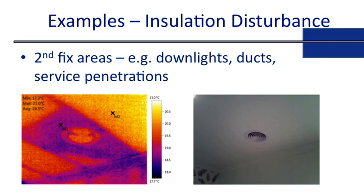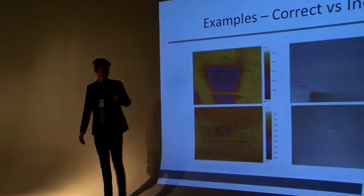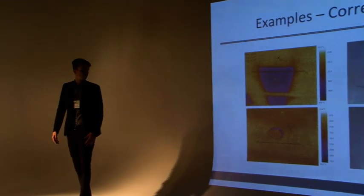Second-fix areas are generally a pretty big issue within our Australian construction industry at the moment. Here we've got a return duct — same concept, batts are moved. More often than not, they're actually up there but they've just been moved and not put back. Here we've got a correct versus incorrect installation — this is an IC-rated downlight, meaning you can lay insulation straight over the top. One image shows a batt missing completely, which is quite a large area. Without thermal imaging, most homeowners wouldn't actually be aware of what's happening in their roof.